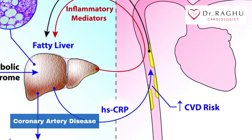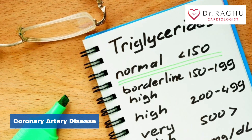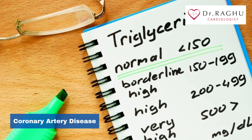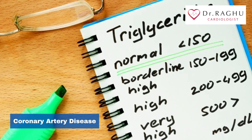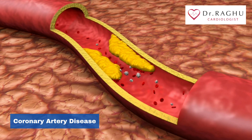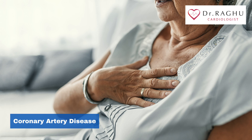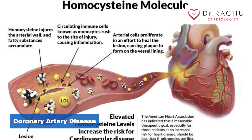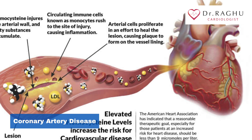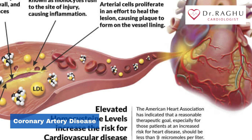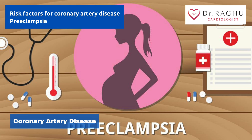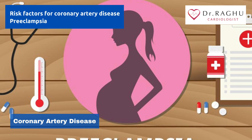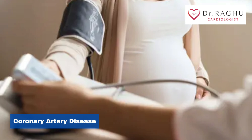High triglycerides — a type of fat in your blood — at high levels may raise the risk of coronary artery disease, especially for women. Homocysteine is an amino acid your body uses to make protein and to build and maintain tissue, but high levels of homocysteine may increase your risk of coronary artery disease.